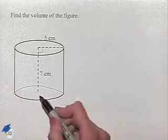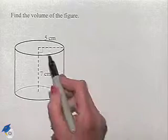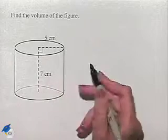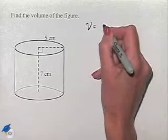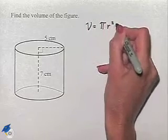We're told that the height of the cylinder is 7 centimeters, and we have the radius of the base as 5 centimeters. The formula we use is volume equals pi r squared times h.